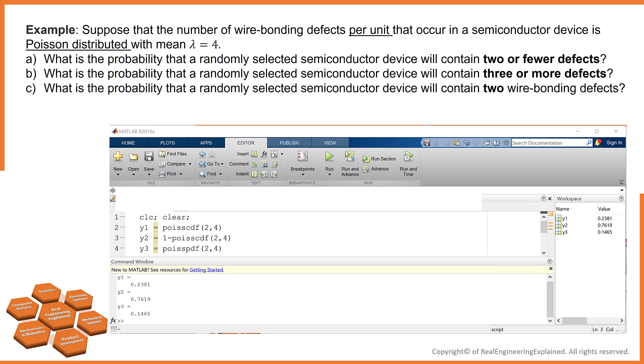The question B is what is the probability that a randomly selected semiconductor device will contain three or more defects? To answer this question, we have to use cumulative distribution function again. Three or more defects is equal to one, the total probability, minus the two or fewer probabilities. And the probability is 76.1%.